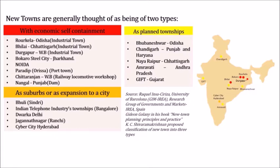New towns have also come up as suburbs or expansions to the city — for example, Bhuli in Sindri, the Indian Telephone Industries township near Bengaluru, Dwarka in Delhi, Jagannath Nagar near Ranchi, and Cyber City in Hyderabad. New towns are also planned townships and planned capitals.